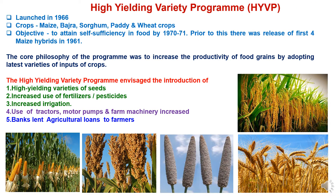The High Yielding Variety Programme was launched in 1966 on five crops: maize, bajra, sorghum, paddy, and wheat, with an objective to attain self-sufficiency in food by 1970-71. Prior to this, the first four major hybrids were released in 1961 to increase productivity. The core philosophy of the program was to increase the productivity of food grains by adopting the latest varieties. It envisaged the introduction of high yielding variety seeds, increased use of fertilizers and pesticides, increased irrigation facilities, use of tractors, motor pumps, farm machinery, and bank agriculture loans to farmers.